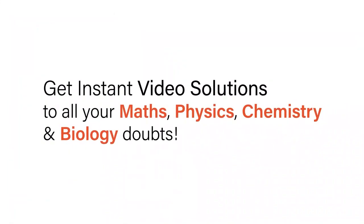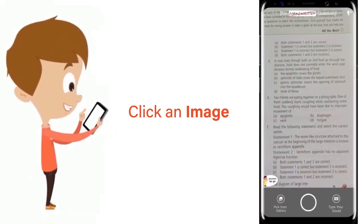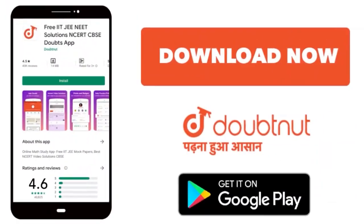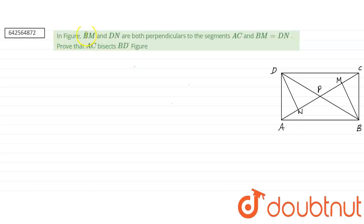With Doubtnet, get instant video solutions to all your maths, physics, chemistry and biology doubts. Just click the image of the question, crop the question and get instant video solution. Download Doubtnet app today. In figure, BM and DM are both perpendicular to the segment AC and BM equals DM.